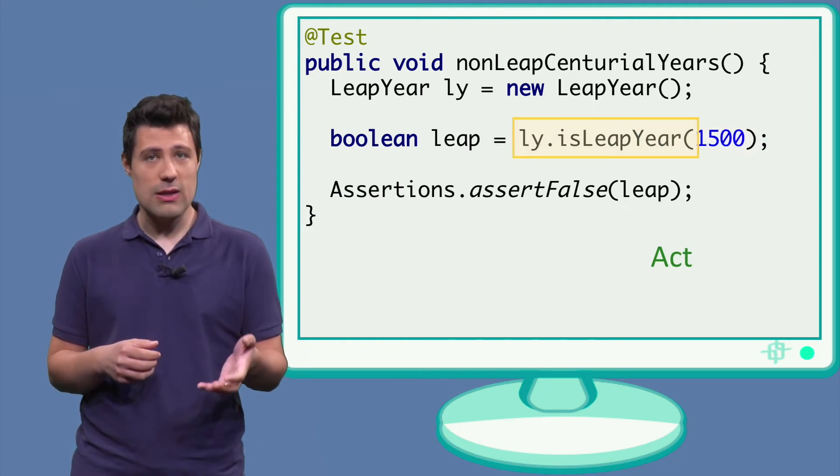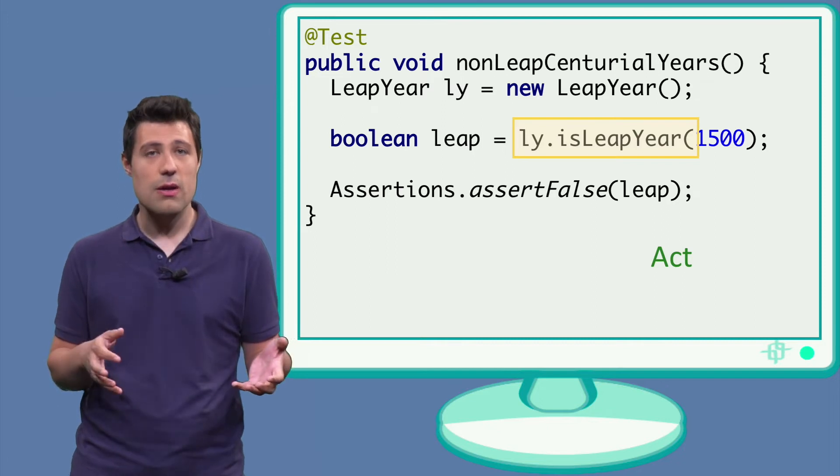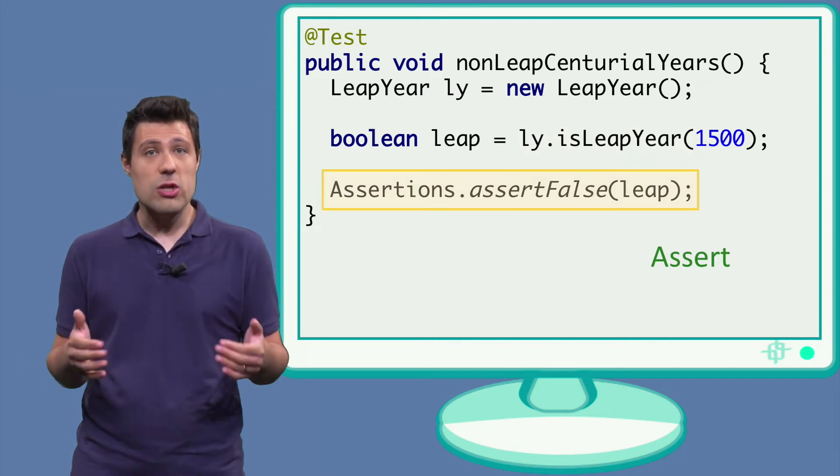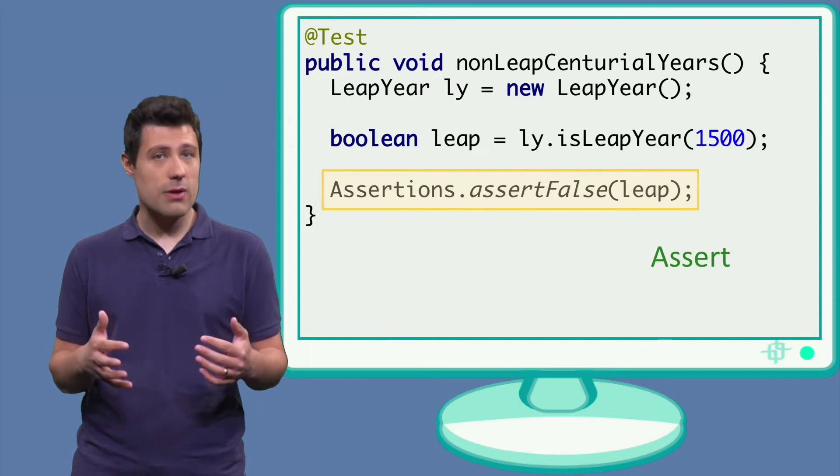In this case, we invoke the method that contains the behavior we want to test. And finally, we then Assert. We make sure that the program behaves as expected for that given input.